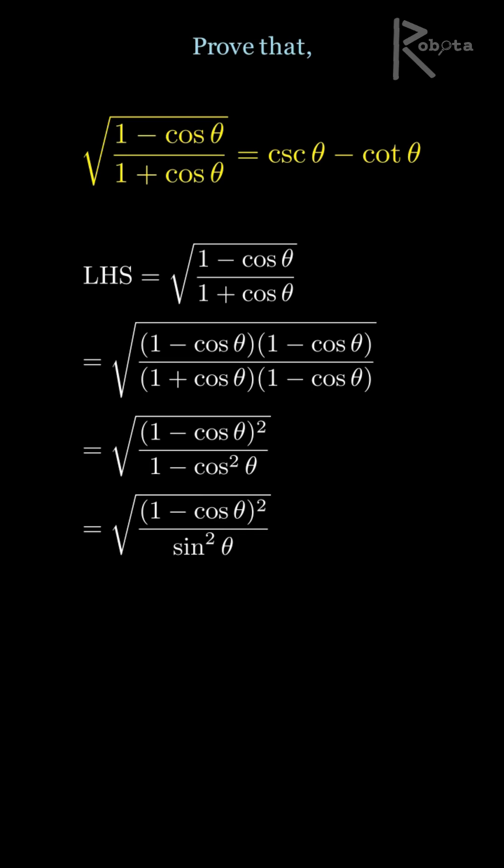When we take the square root of a square, the square root and the square cancel out. So we are left with 1 minus cosine theta divided by sine theta.